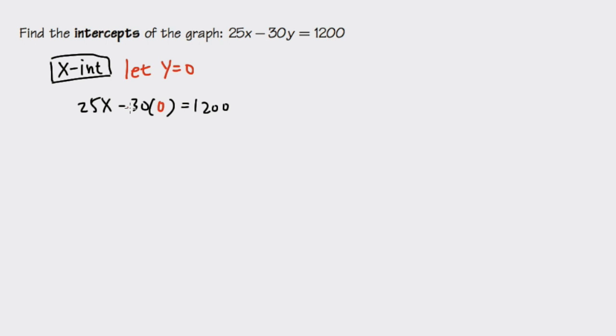Of course, the minus 30 times 0, this is just 0. So we just have 25x equals 1200.